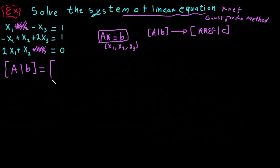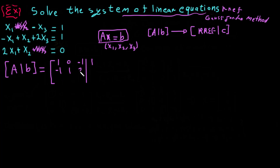We have to rewrite the augmented matrix. The first row is: 1, 0, minus 1, and the answer of the first equation. Then we write the full system: 1, minus 1, 1, 2 — and 1, 2, 1, 2 — and 1, 0, 0 for the third equation.